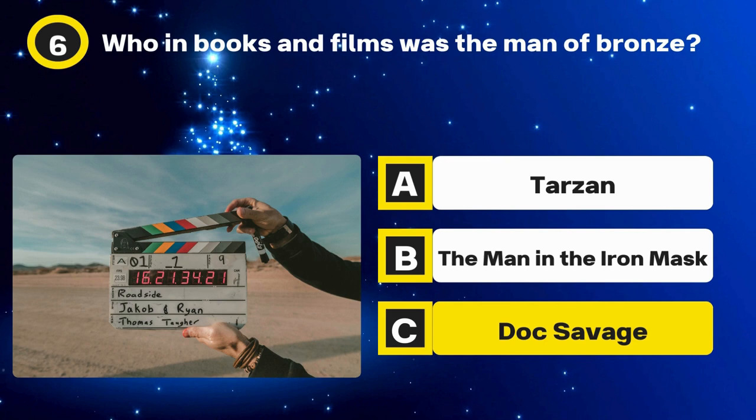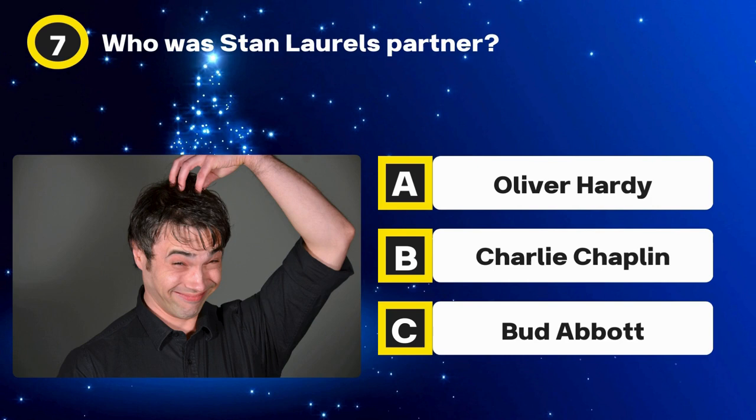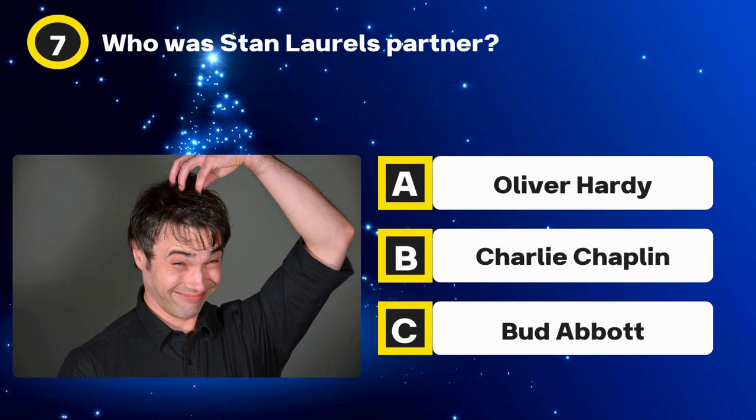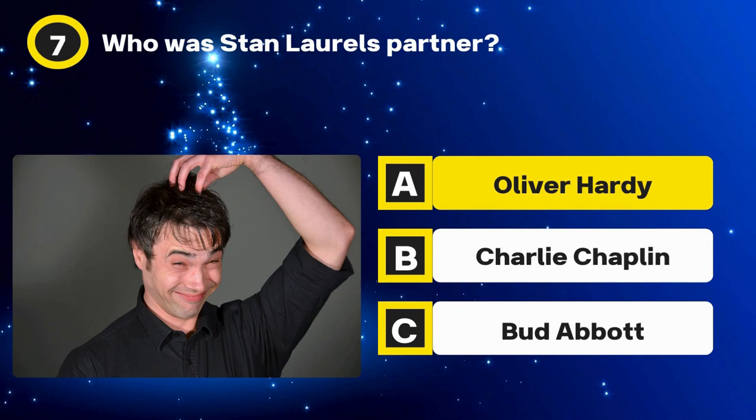Question 7. Who was Stan Laurel's partner? Options: Oliver Hardy, Charlie Chaplin, Bud Abbott. The answer: Oliver Hardy.